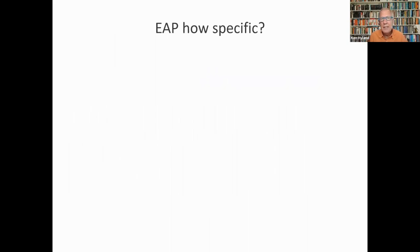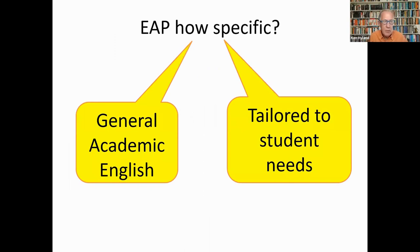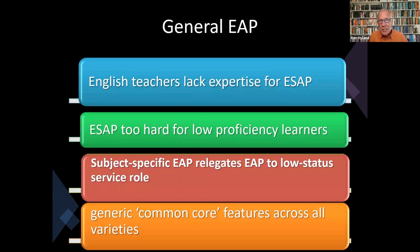So what kind of English should we be teaching? Should we focus on the kind of general academic language that's transferable across disciplines, or tailor our instruction to particular disciplinary needs? There are arguments on both sides. The general EAP people argue that English teachers lack the knowledge and expertise to teach discipline-specific varieties — this was Ruth Spack's argument back in the 1980s. Others say that EAP is too hard for low-proficiency students, that you've got to give them a good grounding in general English before that.